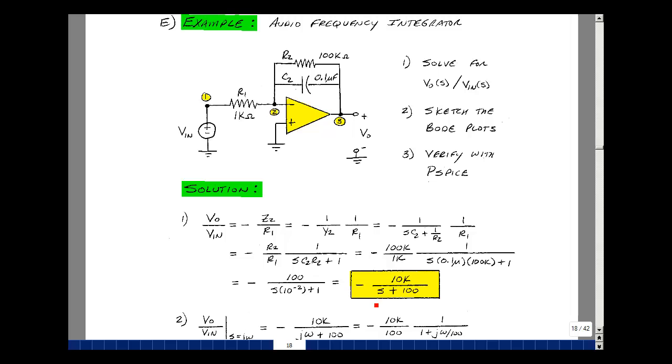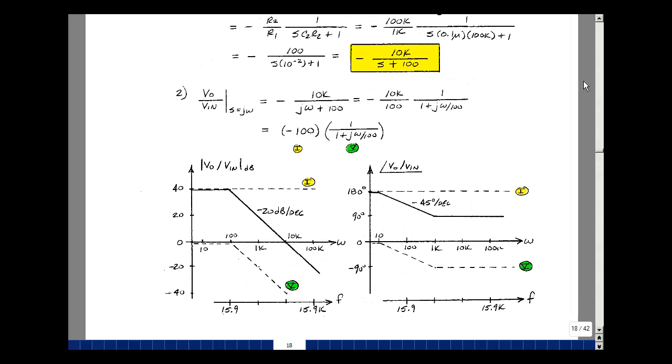Now to sketch the Bode plots, you have to replace S by J omega. We're looking for the steady state response versus frequency. So I have minus 10k over J omega plus 100. Now we need to make this look like our forms. Pull out 100 from the denominator. That's going to leave me with 1 plus J omega over 100. Pull out the 10k and the minus sign. So this ratio is equal to 100, and then multiplied by 1 over 1 plus J omega over omega C, where omega C is 100. That now is our form 1 and our form 5.